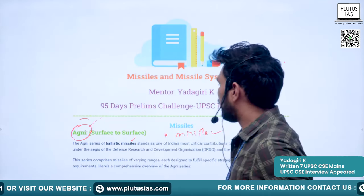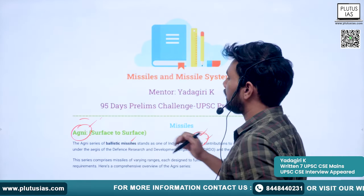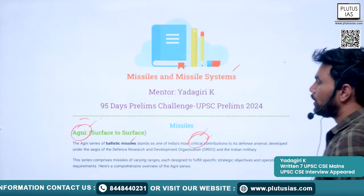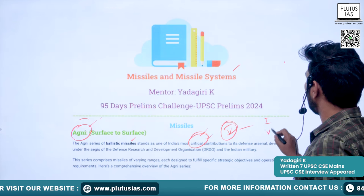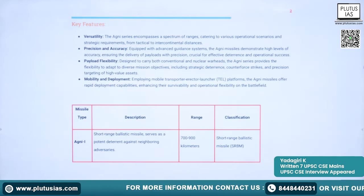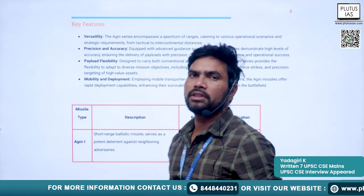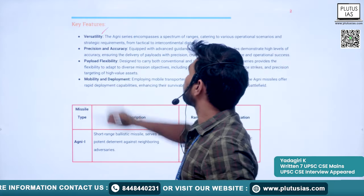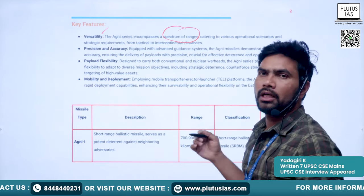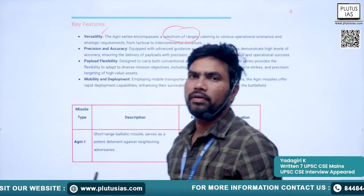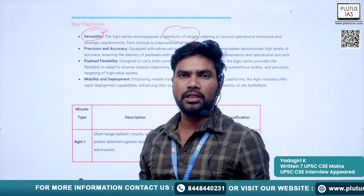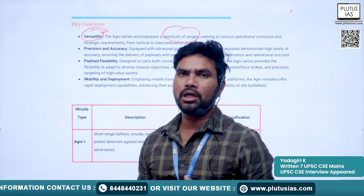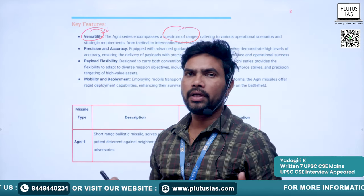Agni is the most important and critical missile system in India. It has five variants, from Agni-1 to Agni-5. One key feature is versatility — it encompasses a spectrum of ranges. According to the necessity, different variants can be deployed.